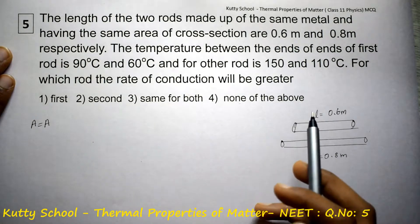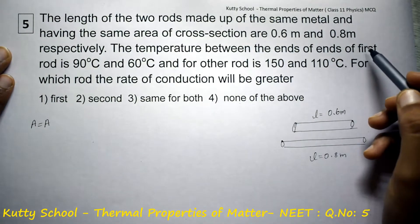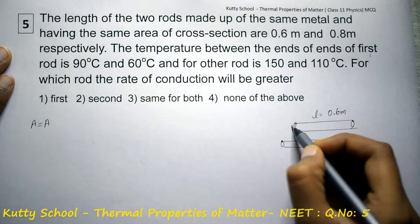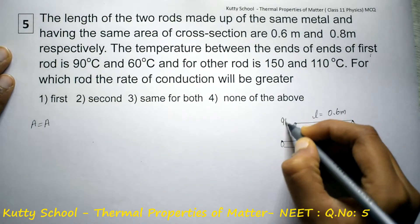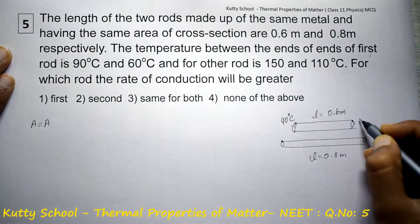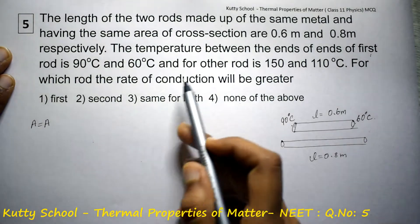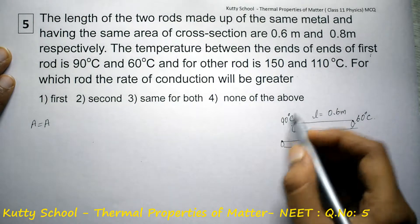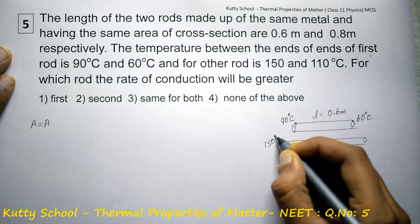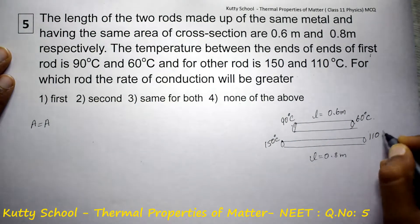The temperature between the end to end of first rod is 90 degrees Celsius and 60 degrees Celsius. And for the other rod it is 150 and 110 degrees Celsius.